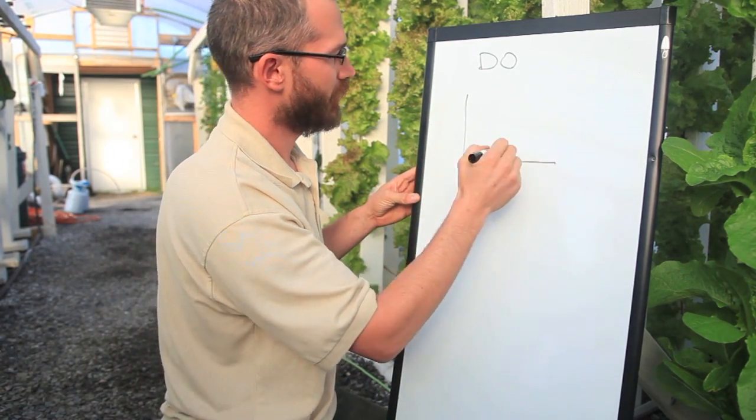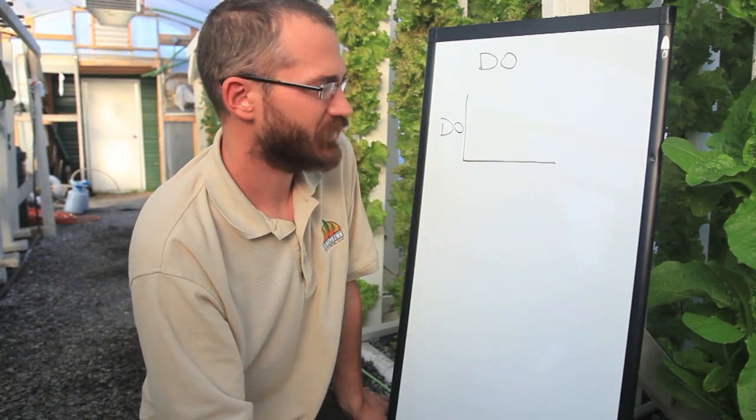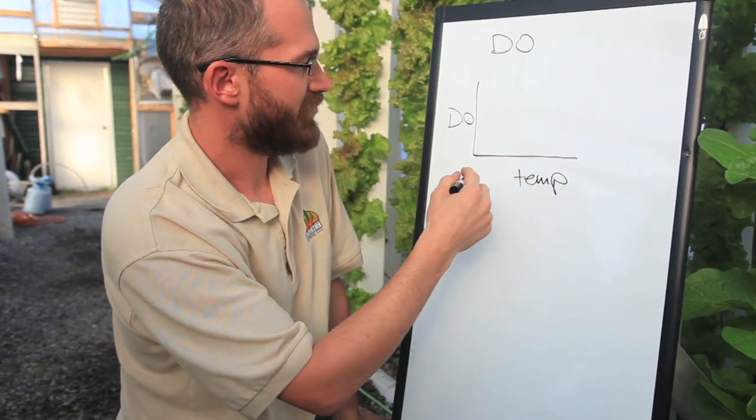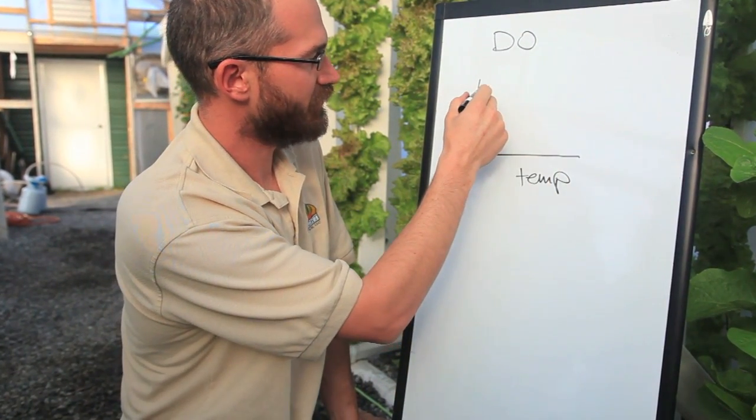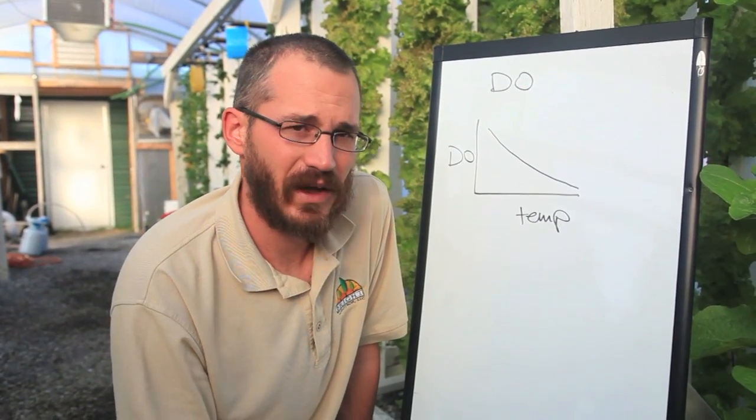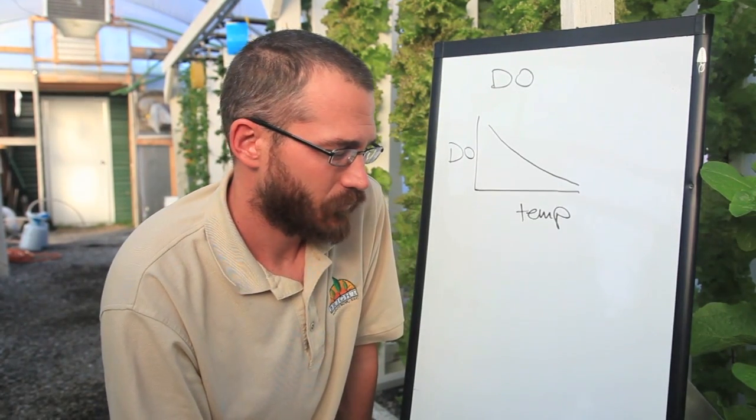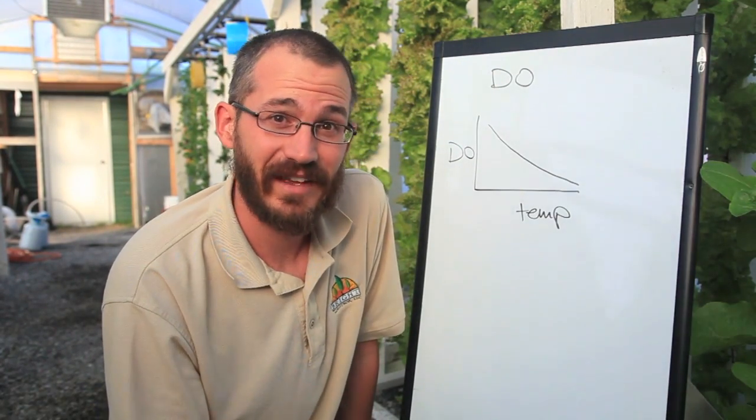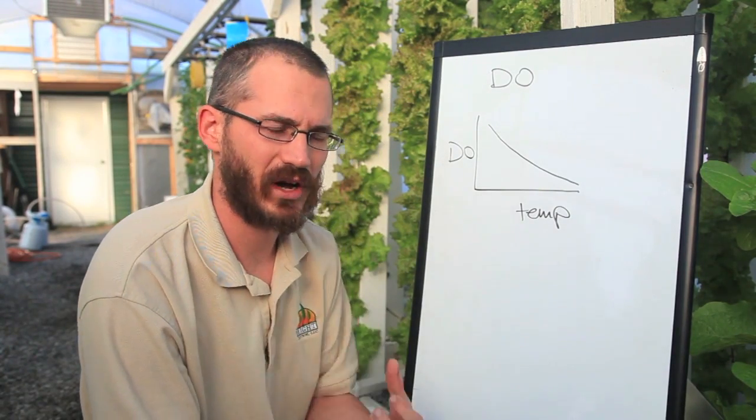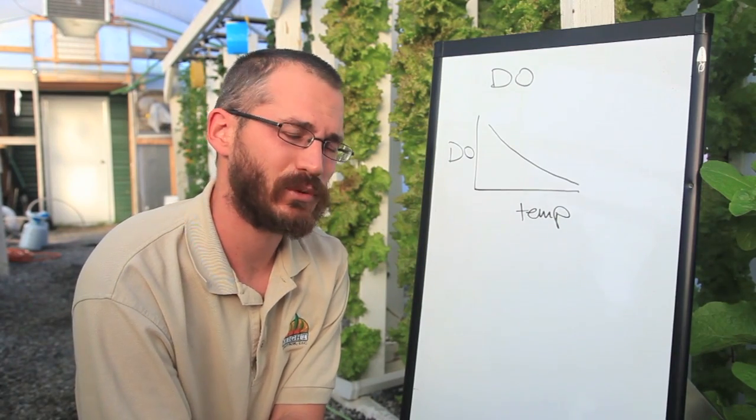If we think about dissolved oxygen, if this is the amount of dissolved oxygen and there's a whole bunch of different units you can use for this, and this is temperature, as the temperature rises, dissolved oxygen becomes less and less soluble. So as the temperature rises, there can be less oxygen in the water. Also associated with that is as the temperature rises, the metabolism of a lot of organisms increases, so you get a lot more oxygen consumption. You combine those two and you can kind of have a bit of a deadly reaction there.